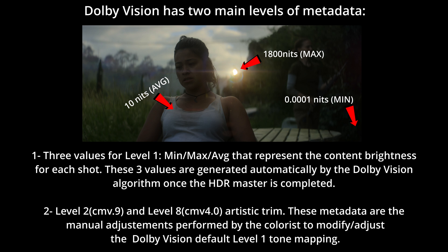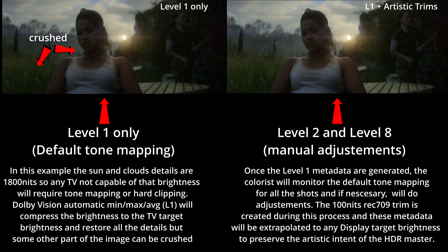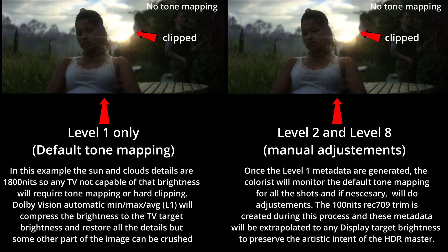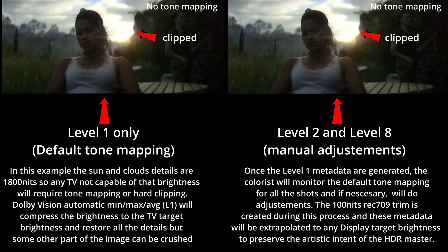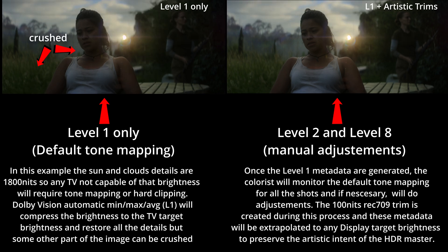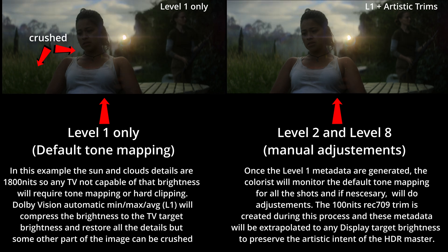The colorist can then preview the tone mapping shot-by-shot across different target brightness levels — typically 100 nits, but also 600 and 1000 nits — and make any necessary adjustments to preserve the artistic intent of the HDR master. These trim control modifications are recorded as Level 2 or 8 metadata. As you can see in this example, the sun and cloud details peak at around 1800 nits, so any TV that can't reach that brightness will require either tone mapping or hard clipping. Dolby Vision's default Level 1 tone mapping compresses the brightness to match the TV's target capability, and restores most of the highlight detail.